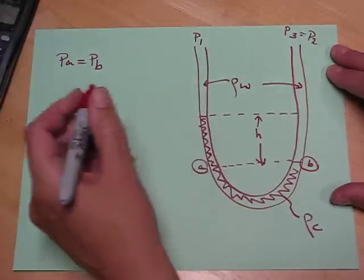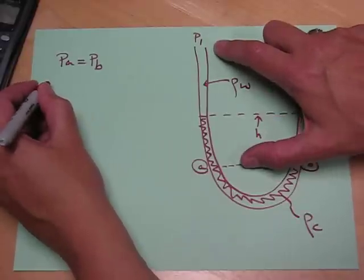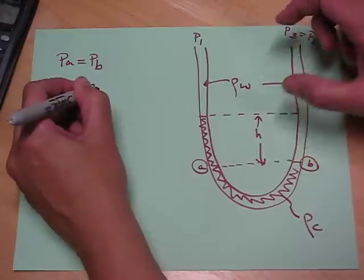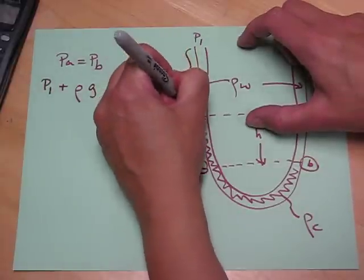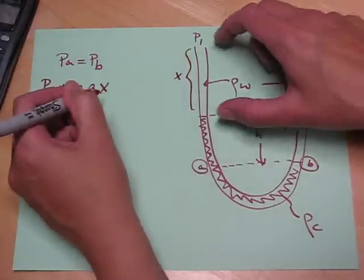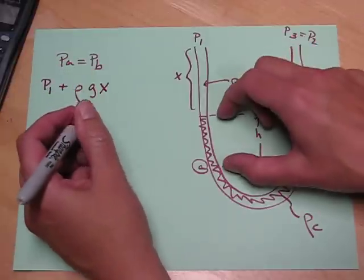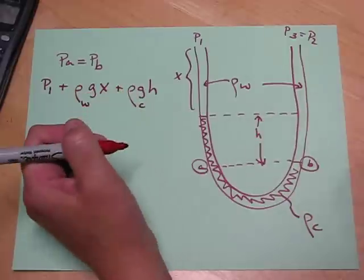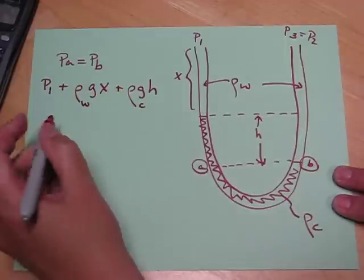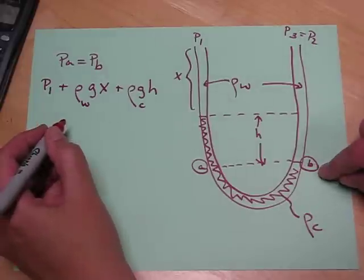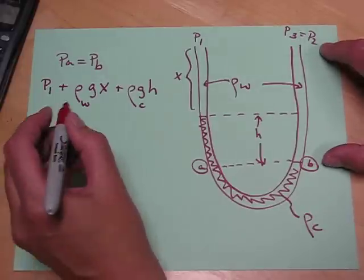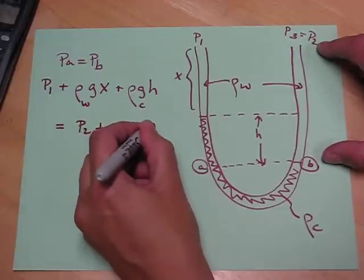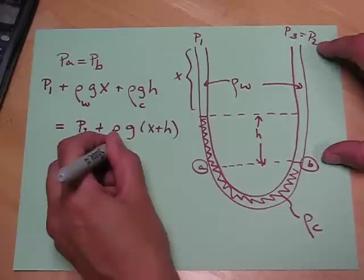So with this second concept, we can write first PA. PA is equal to the pressure at the top plus rho G height. We call this X. Rho G height, where this is rho of water, plus rho G height here, where this is carbon tetrachloride. That's equal to PB, which is the pressure at the bottom of the column of fluid. It's equal to the pressure at the top plus rho G height, but the height now is X plus H, and the fluid is water.